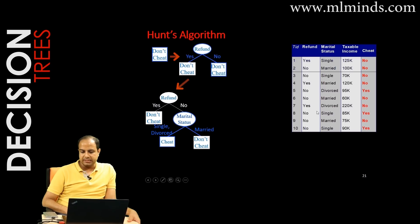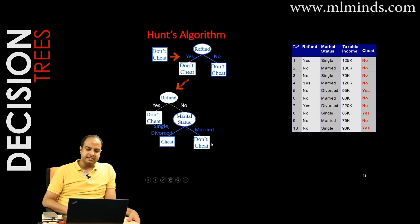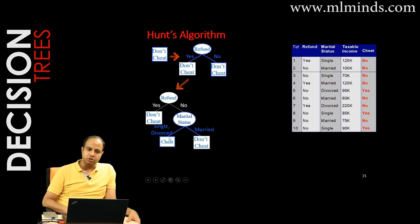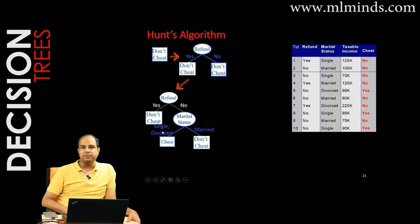Of the three married instances — 2, 6, and 9 — all have class label no, so this is a pure node and we assign 'don't cheat.' On the left side, four instances go to the 'single or divorced' branch, and among those, three are yes and one is no.